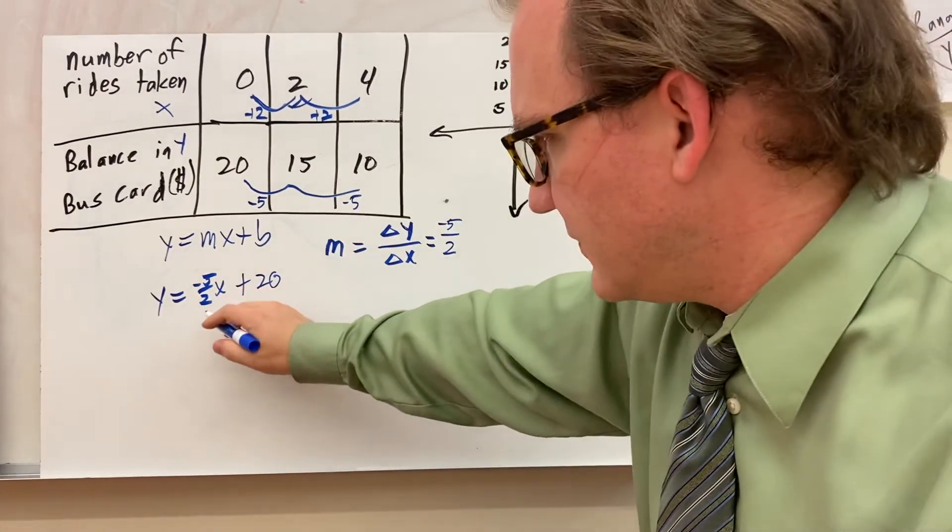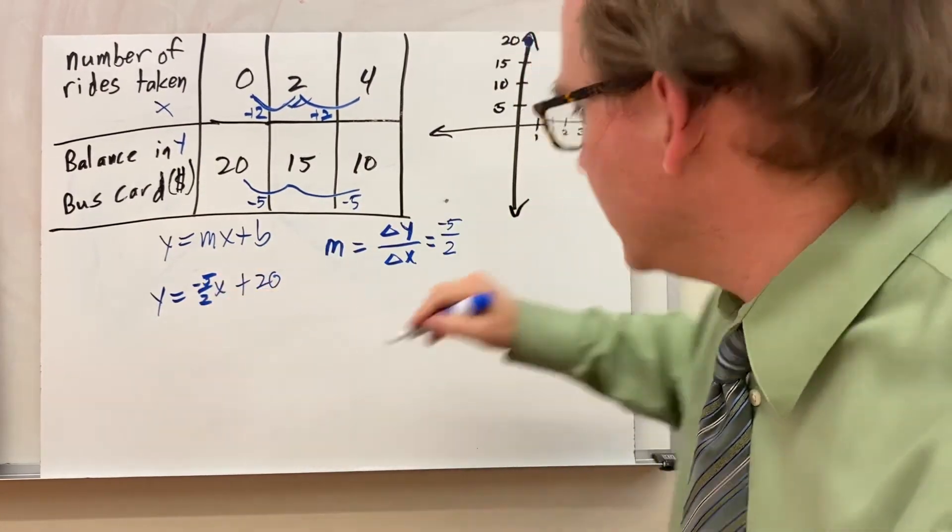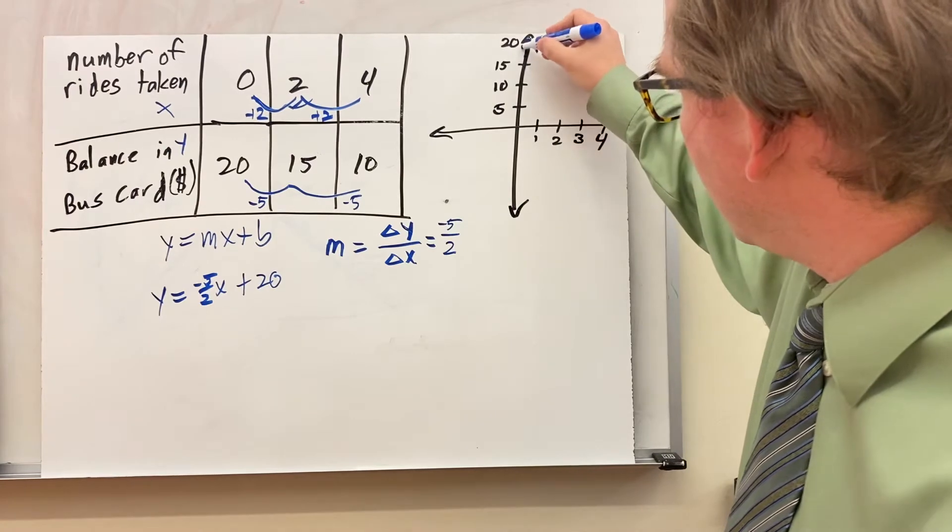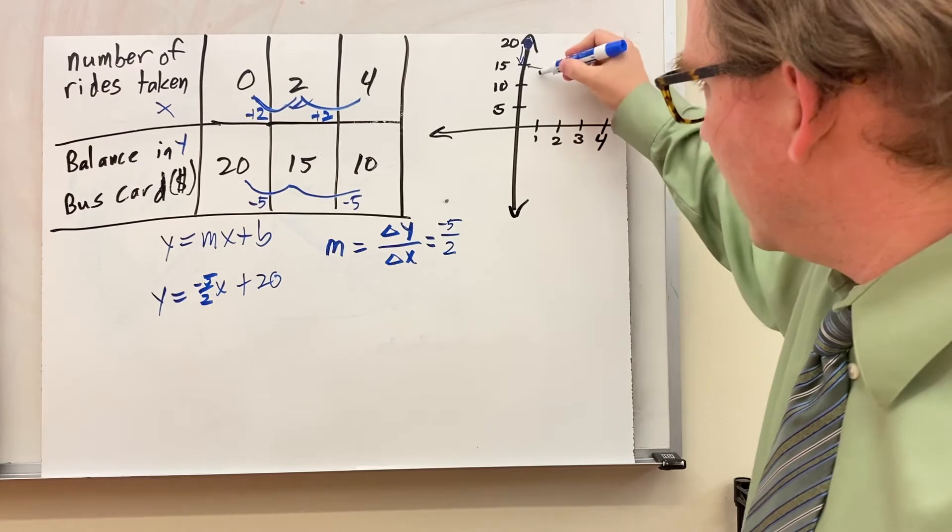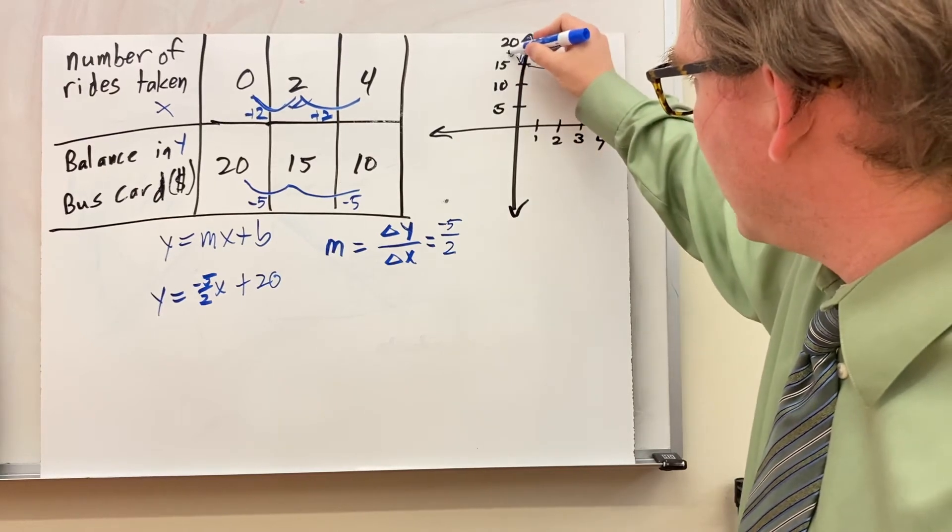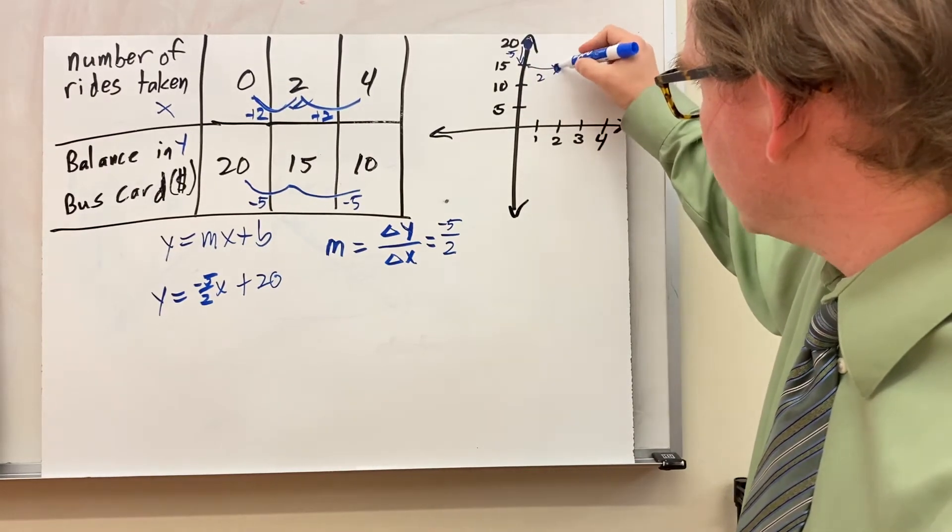Now my slope is negative. So I have to go down 5, right 2. So down 5 to 15, right 2. Note my scale is a little bit different on my x and y axis. So down 5 over 2. I plot my second point.